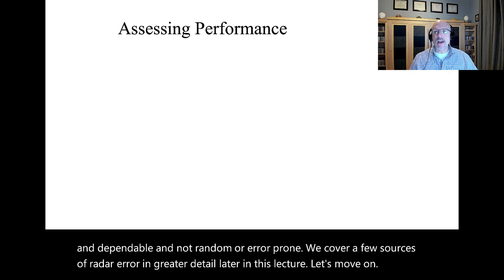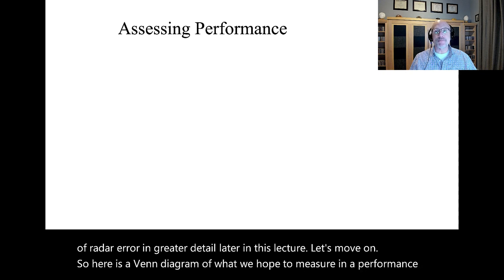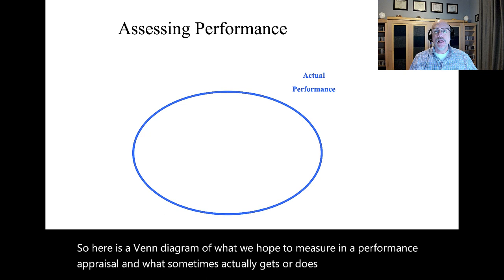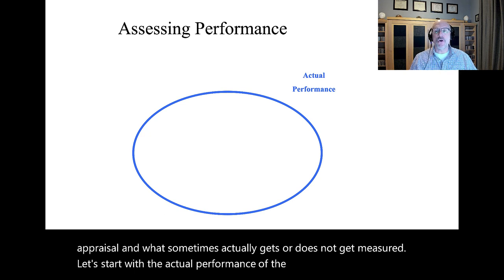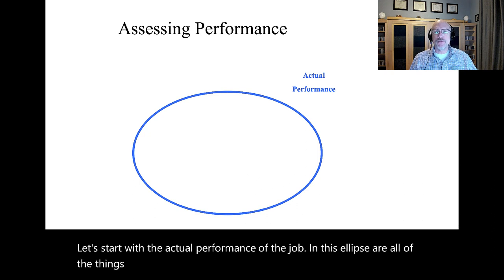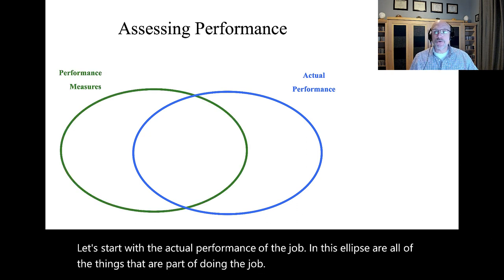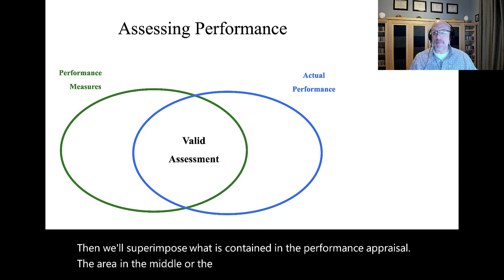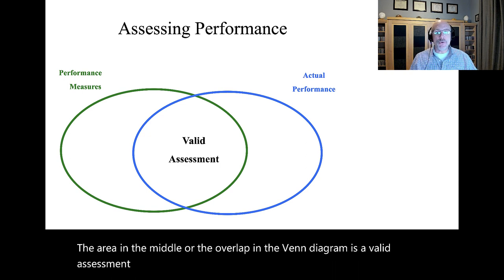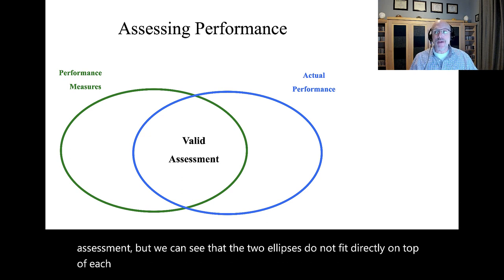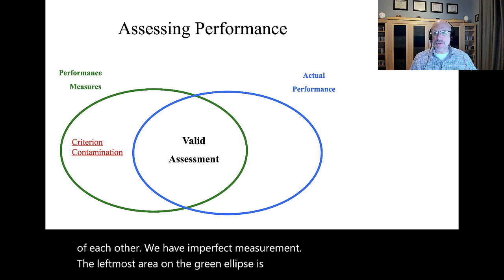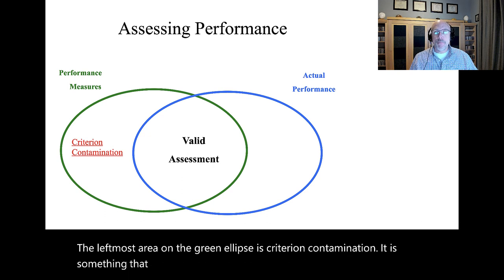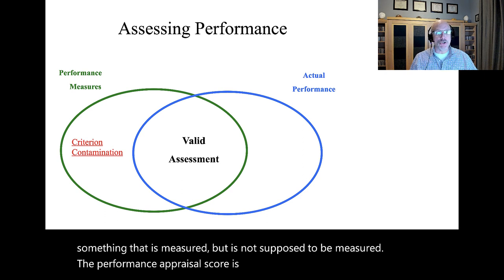Here is a Venn diagram of what we hope to measure in a performance appraisal and what sometimes actually does or does not get measured. The ellipse represents all of the things that are part of doing the job. The overlap in the Venn diagram is a valid assessment, but the two ellipses do not fit directly on top of each other — we have imperfect measurement. The leftmost area in the green ellipse is criterion contamination: something that is measured but is not supposed to be measured.